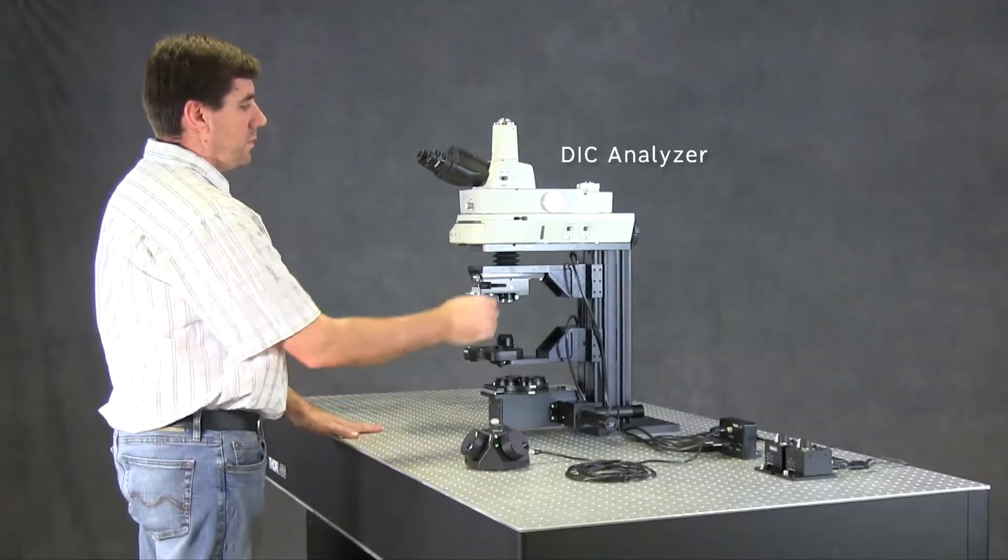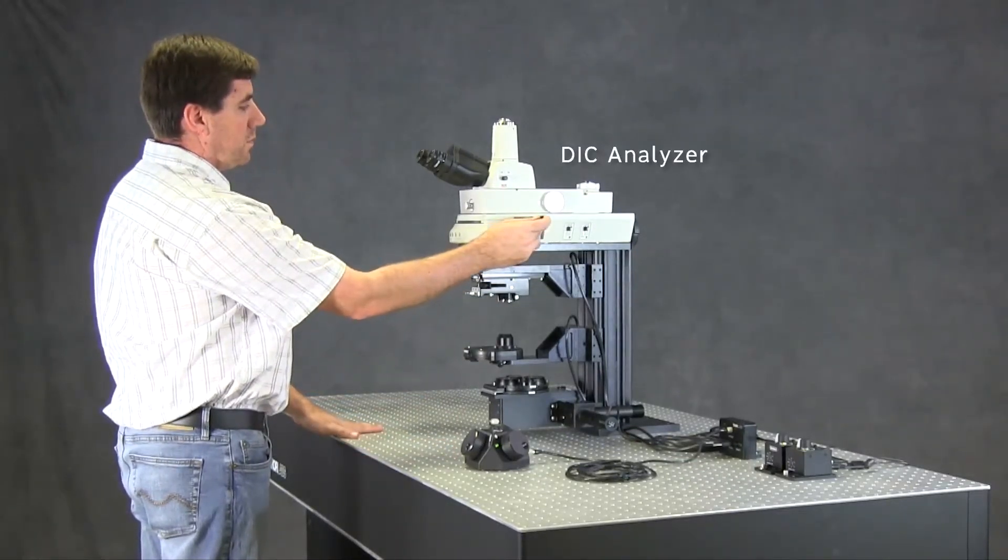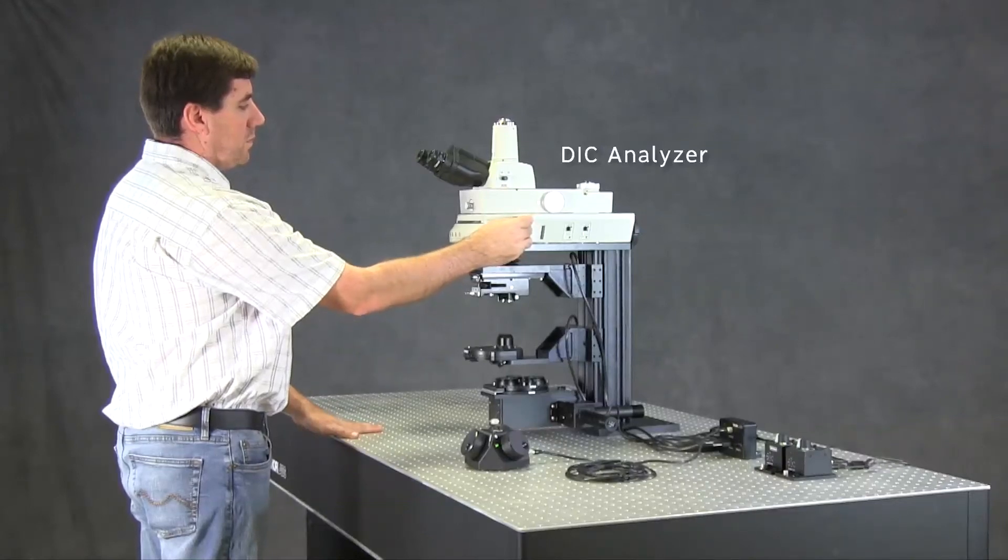For DIC, the microscope includes a DIC analyzer. It contains two polarizers for either the visible or the near-infrared.